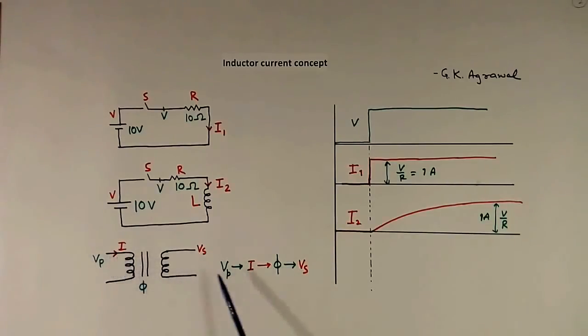So because of voltage, first current flows in the primary. Then flux is generated in the core. And if flux is changing with time, then voltage is generated in the secondary. This voltage can generate without any current in the secondary. So first voltage is applied, then current is generated, then current produces flux, and change in flux produces secondary voltage.